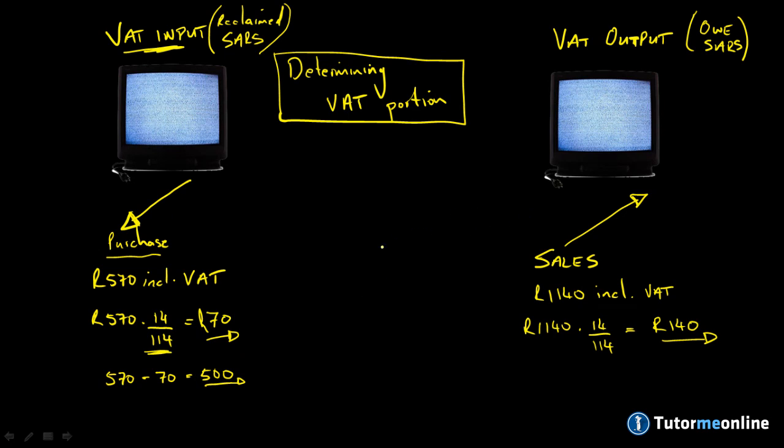This leads us to how we work out what the portion is that we actually pay. The VAT input is the half that we reclaim from SARS, and the output portion is the portion that we have to pay SARS. VAT output minus our VAT input is the money owed to SARS.